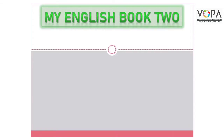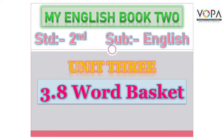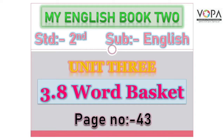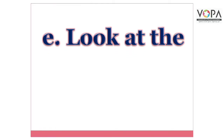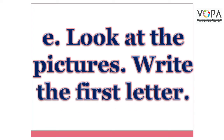My English book, Class 2, subject English, Unit 3, 3.8 Word Basket, page number 43. Activity E: look at the pictures and write the first letters. प्यारे बच्चों, आपको कुछ तसावीर दी गई हैं, आपको उन pictures को देखना है और उन pictures के नाम का first letter आपको लिखना है।